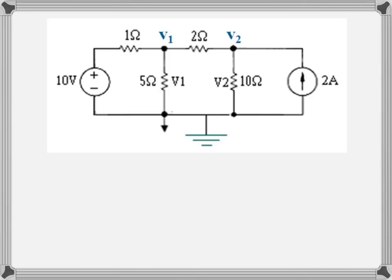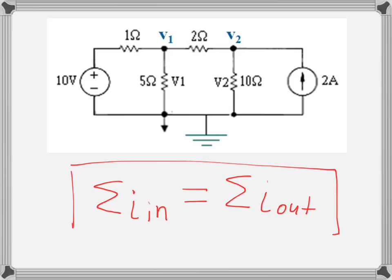Nodal analysis. Let's analyze the following circuit with the nodal analysis. First of all, what is nodal method or nodal voltage method? Nodal analysis is the application of Kirchhoff's current law. Kirchhoff's current law states that the sum of all currents coming into the node equals to the sum of all currents leaving the node. The node is the point where two or more branches are connected.